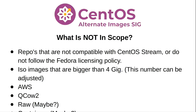What is not in scope? I think this is almost bigger. First off, the repos have got to be compatible with Fedora — we're not going to suck in a repo. I'll just name the one people are going to ask about: RPM Fusion. We can't put that on a CentOS site, so we're not pulling in RPM Fusion stuff. It's got to follow Fedora licensing policy.